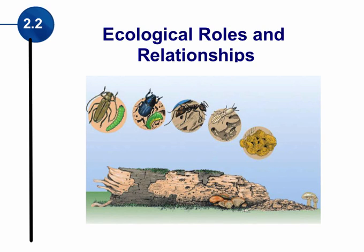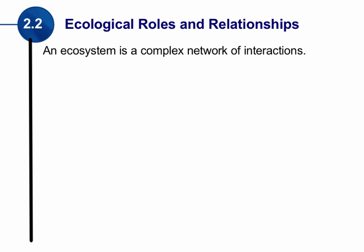As we continue on with our study of ecosystems, let's look now at the roles within an ecosystem — the roles and relationships that organisms have. An ecosystem is really just a complex network of interactions: different organisms, different populations interacting with each other.